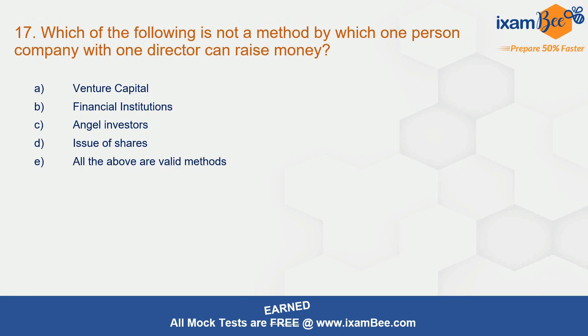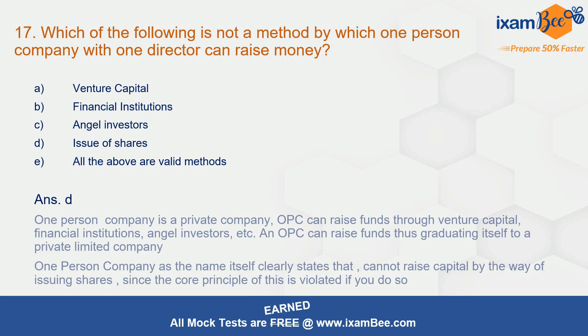Question 17: which of the following is not a method by which a one-person company with one director cannot raise money? The correct answer is the issue of shares. A one-person company is a private company and it cannot raise money through the issue of shares.